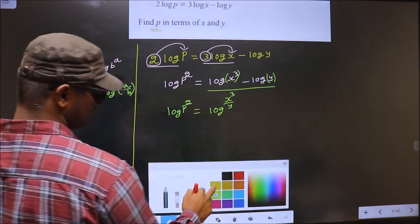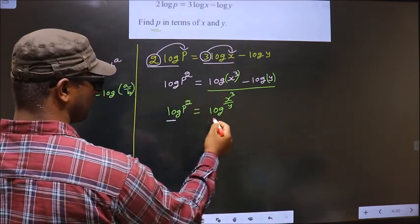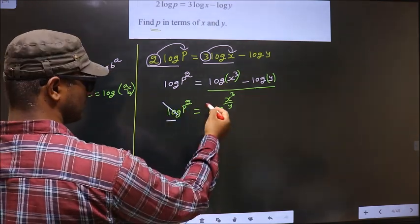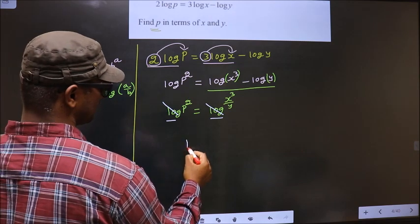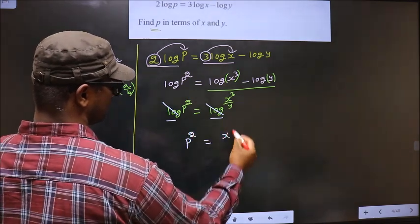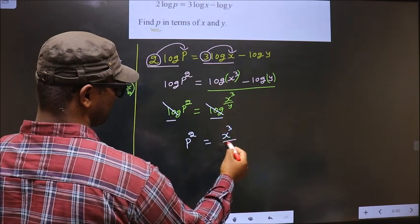Log p square. Now we have log on both sides. So now you cancel log on both sides. On this side you are left with p square equal to on this side x cube by y.